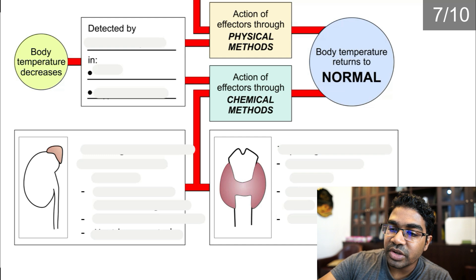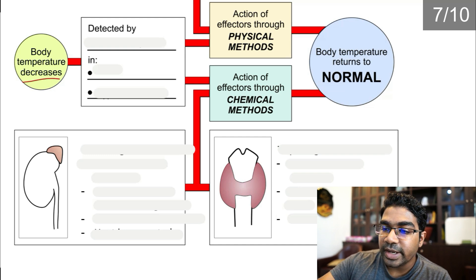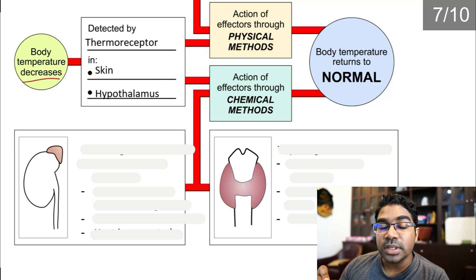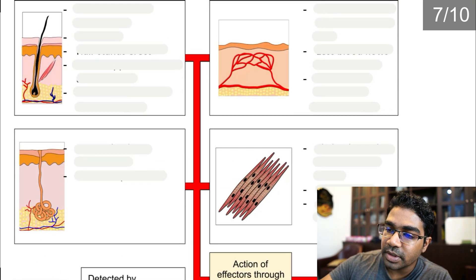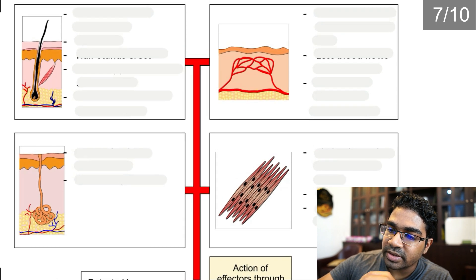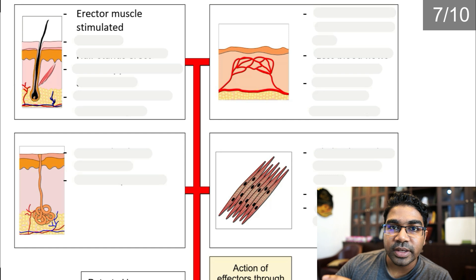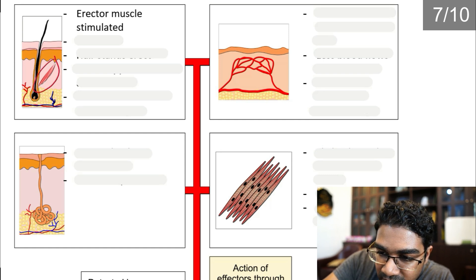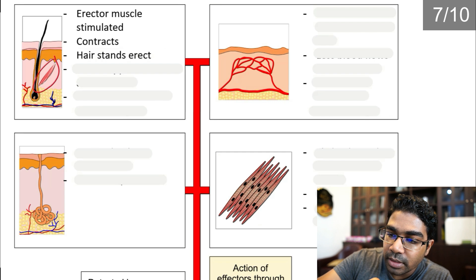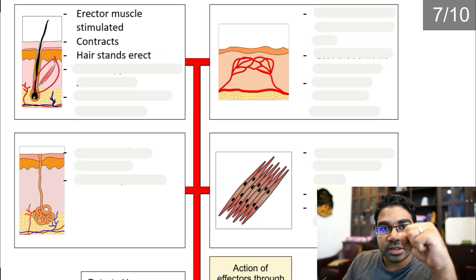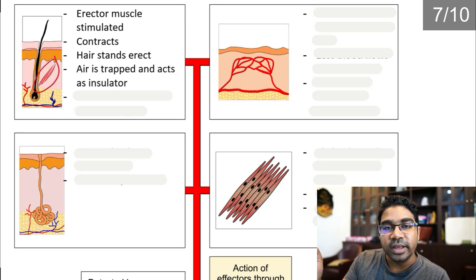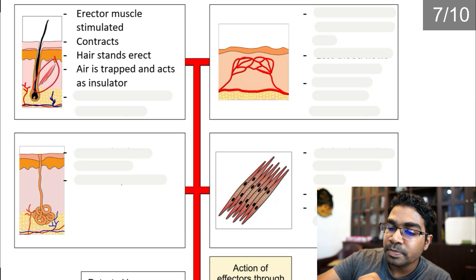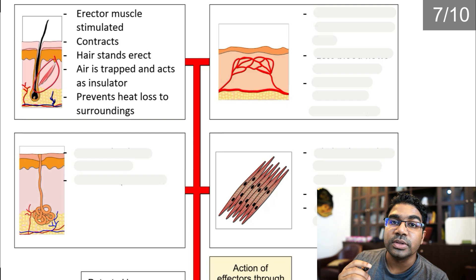When body temperature decreases, it is detected by the same thermoreceptors in the skin and hypothalamus. For the physical method: the erector pili muscle is stimulated and contracts, causing the hair to stand erect. When the hair stands erect, air is trapped and it acts as an insulator — like an invisible sweater on the skin — preventing heat loss to the surroundings.